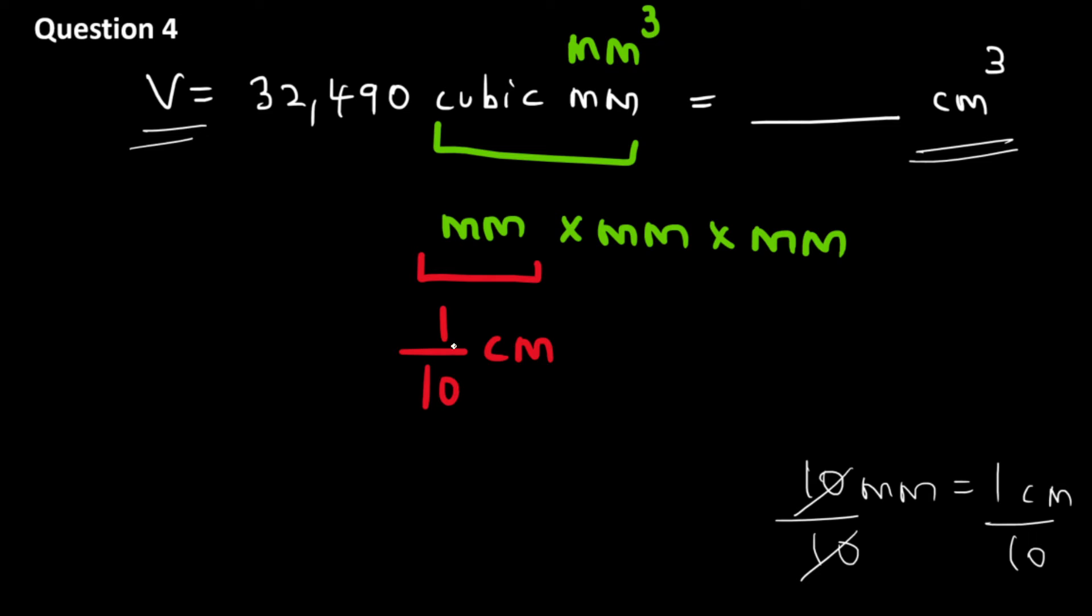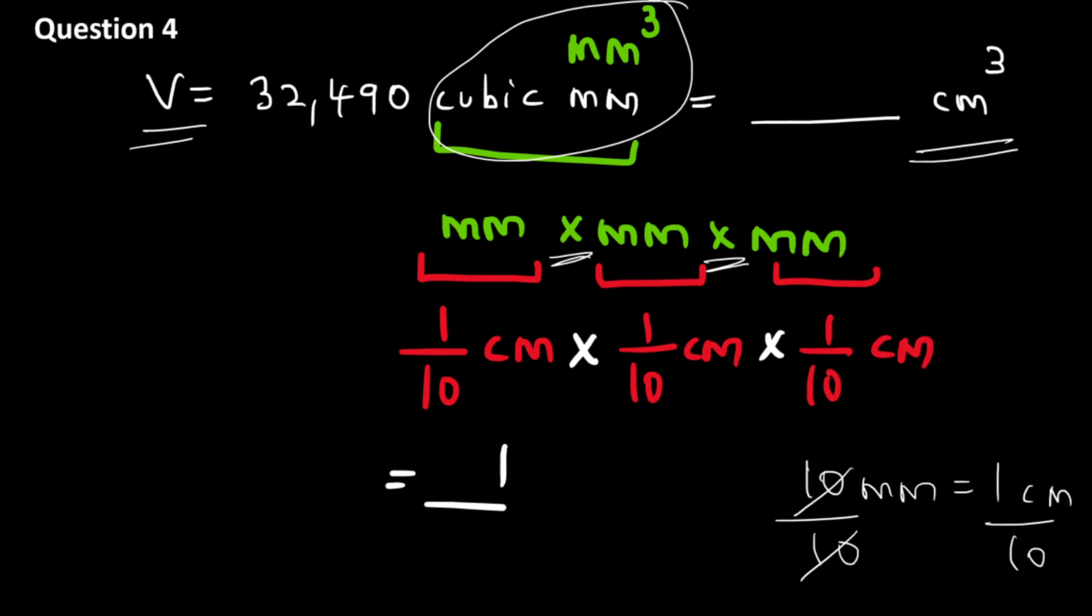So instead of this millimeter let's write one by 10 of a centimeter and let's do the same thing for these two parts also. Now over here we have multiplication happening. In this way you can see that one millimeter cube is equal to one by thousand of centimeter cube, because one by 10 into one by 10 into one by 10 is nothing but one by thousand.